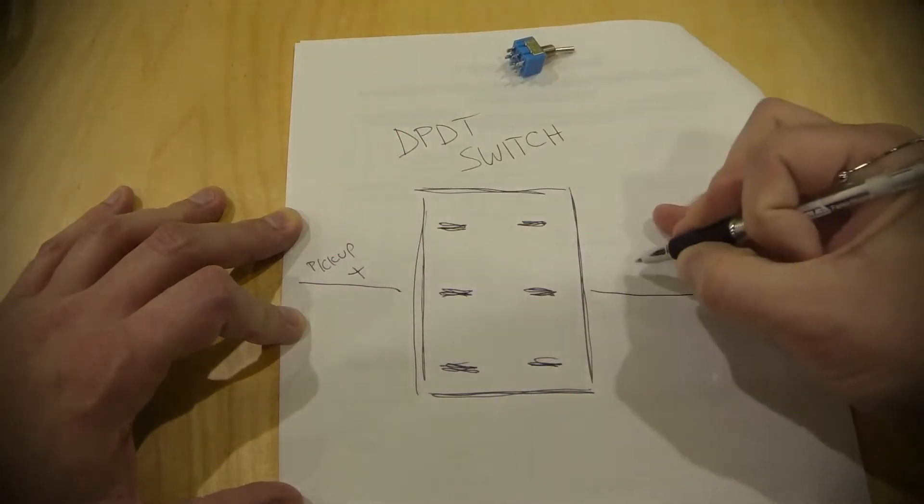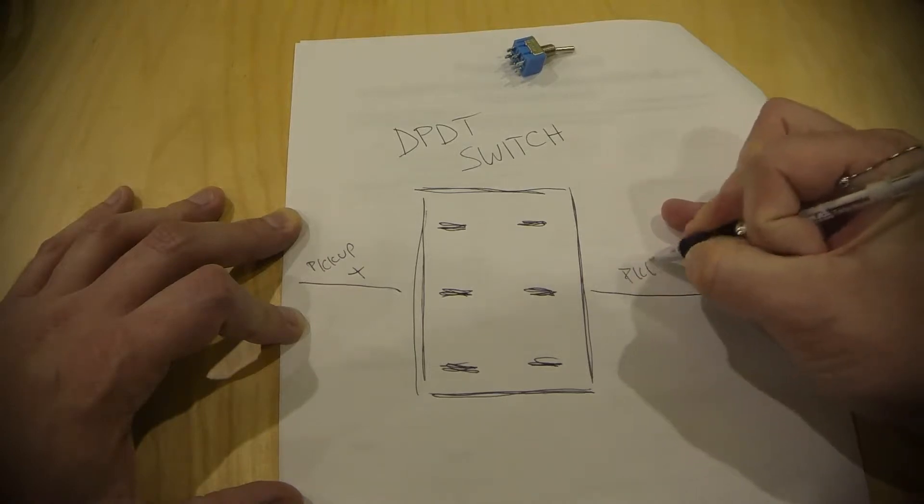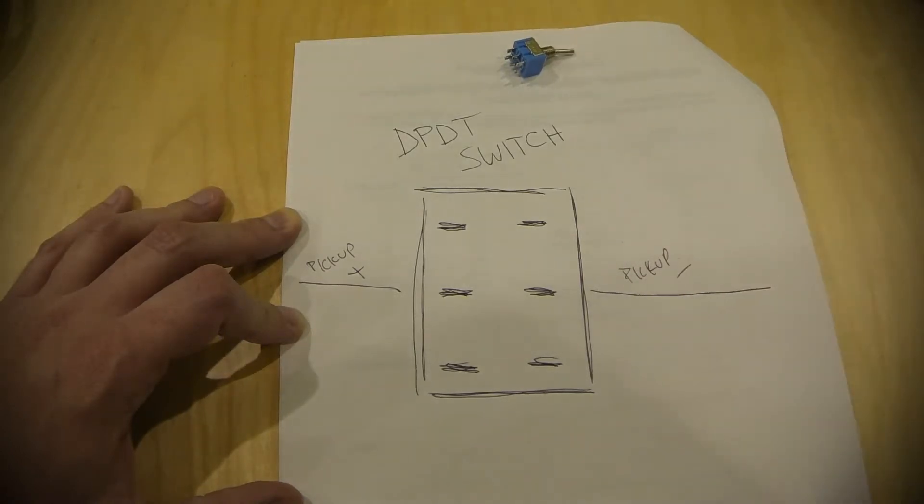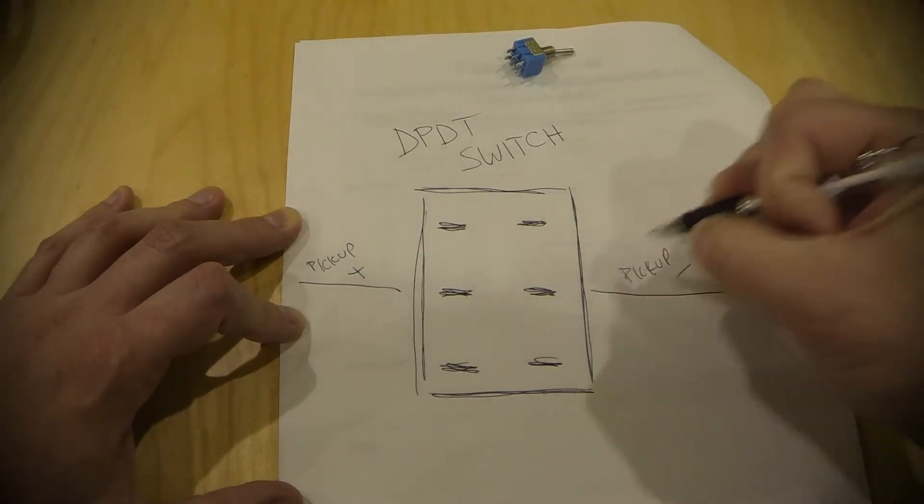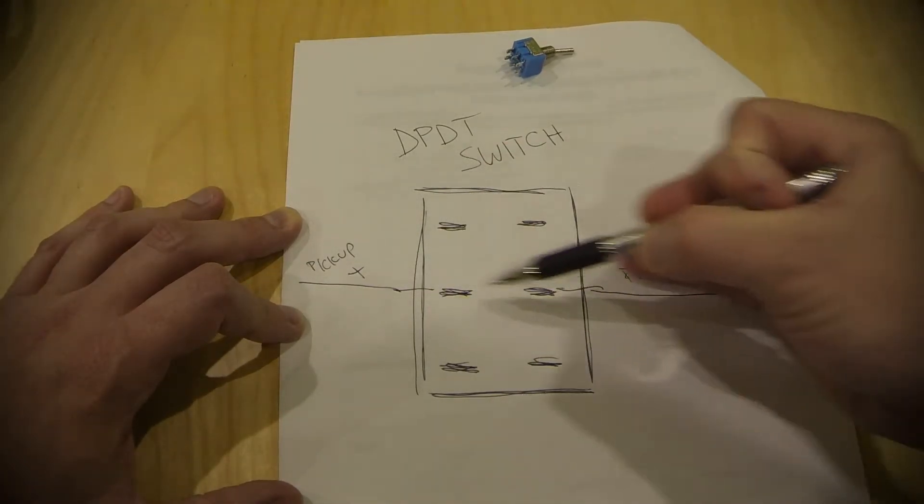Pickup positive and negative is what we're going to call them, but really it's a start and finish of your coil. And those are coming in to your center pins on your switch. These are the pins that are always connected.